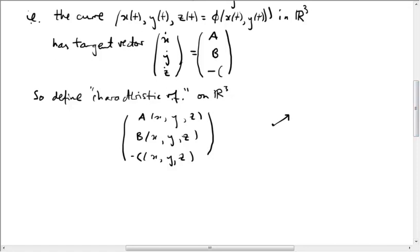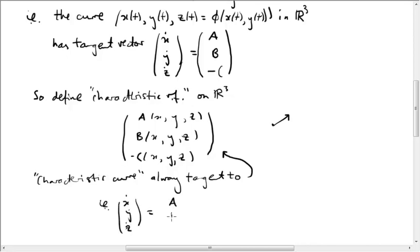And what's this curve? This curve is called a characteristic curve. It's a so-called integral curve for the vector field. In other words, it's always tangent to this vector field, which I'll just put an arrow, this vector field here. In other words, x dot, y dot, z dot equals A, B, minus C.